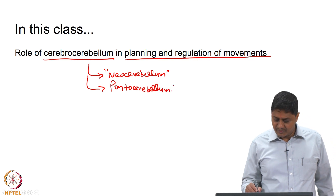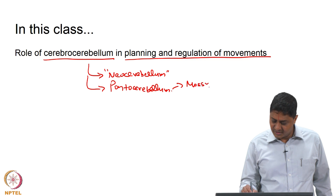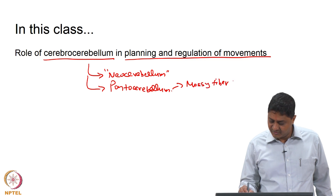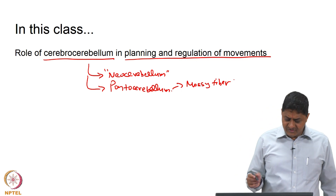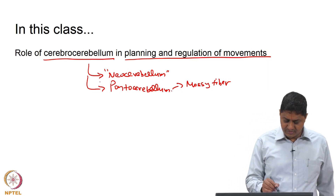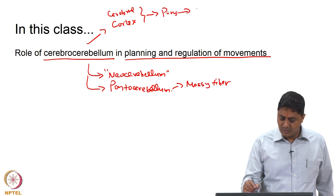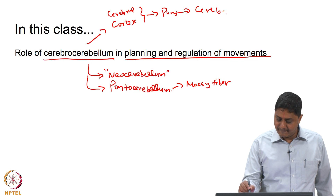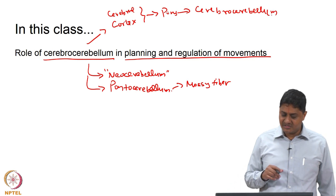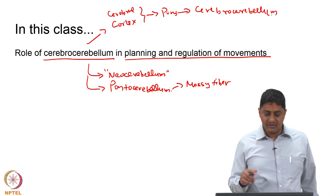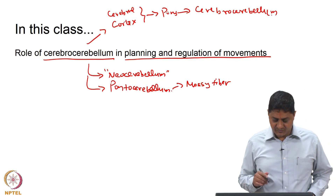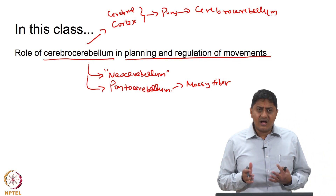The inputs it receives from the pons are mossy fibers — mossy fiber input from the pons. The pons obviously receives its inputs from the cerebral cortex. So the pathway is: cerebral cortex to pons to cerebrocerebellum. The pontine areas that project to the cerebrocerebellum receive inputs from the cerebral cortex.